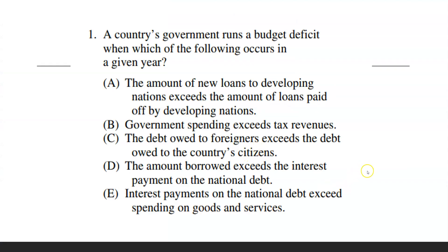Question 1: A government runs a budget deficit when which of the following occurs in a given year? A country takes in money through taxes — taxes are income for governments — and then the government spends money. If it spends less than it takes in, it's running a surplus. If it spends more than it takes in, it's running a deficit. All the deficits and surpluses added together make up the public debt.